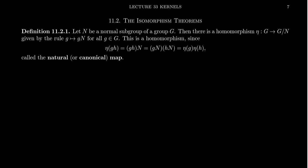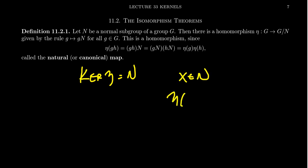So this is a homomorphism called the natural map, or sometimes called the canonical map. The natural map gets its name because it really is the only natural way to send an element of G into G mod N without knowing any more about the group structure. Note also that the kernel of the natural map eta is actually equal to N itself. Because every normal subgroup is the kernel of a homomorphism, normal subgroups and kernels of homomorphisms represent the same collection of subsets of a group.